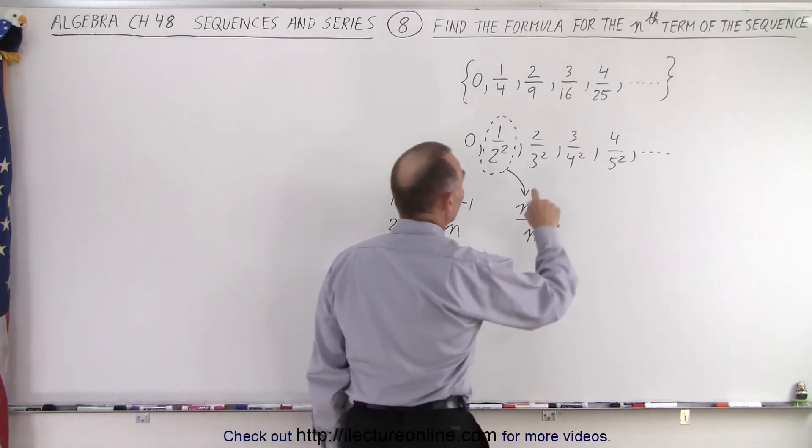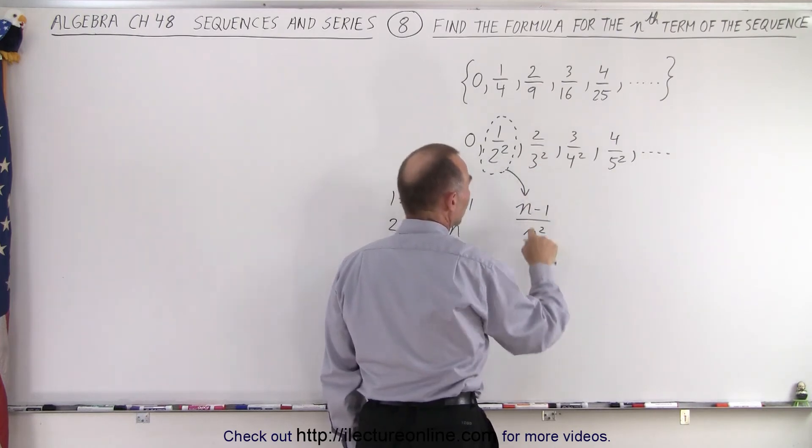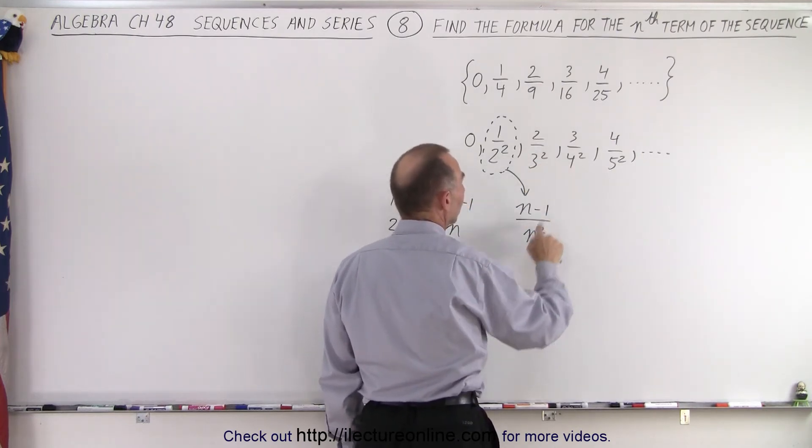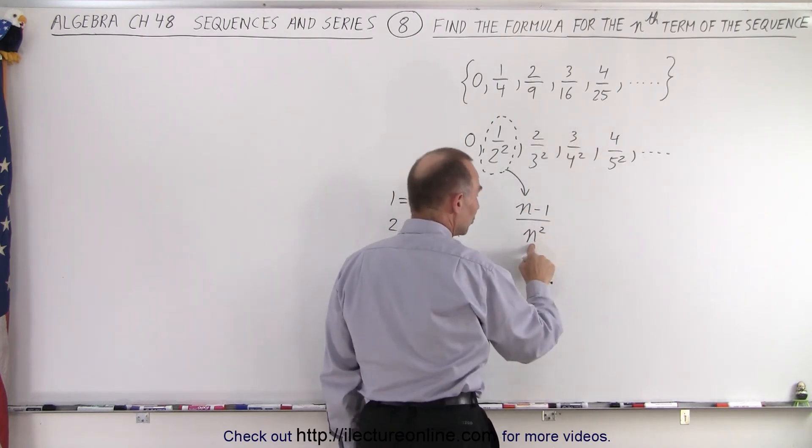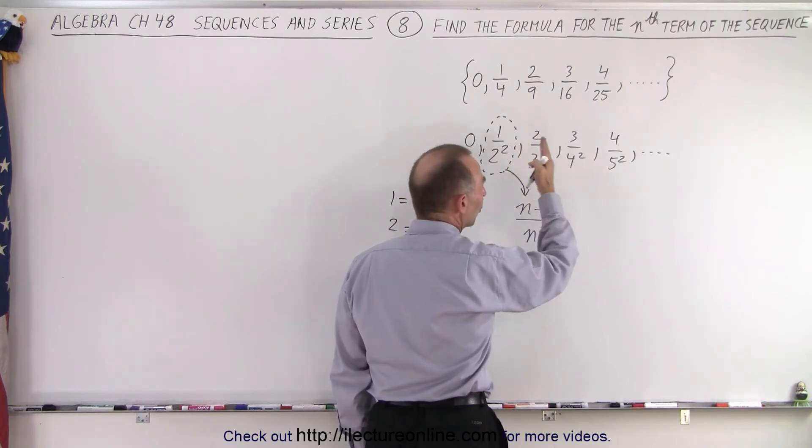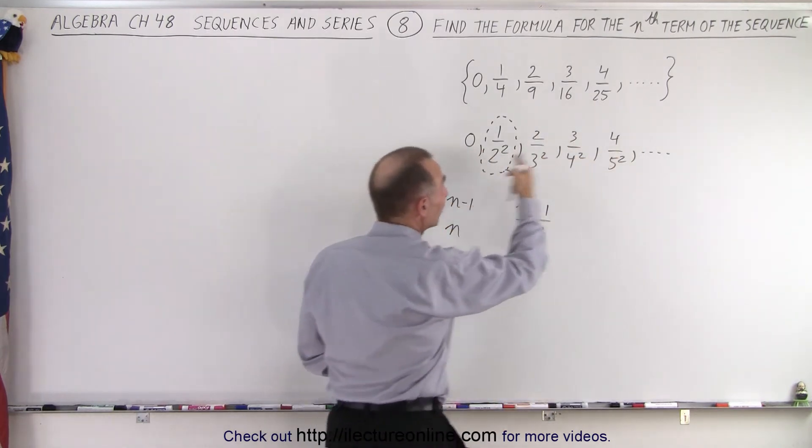Well, we could say that 2 is N minus 1, then 1 more than 2 is 3, which would be N, and N is squared. If 3 is equal to N minus 1, then 4 is 1 more or N, and it's squared. So it seems to work for every consecutive term. It's a general way of expressing any of the terms.